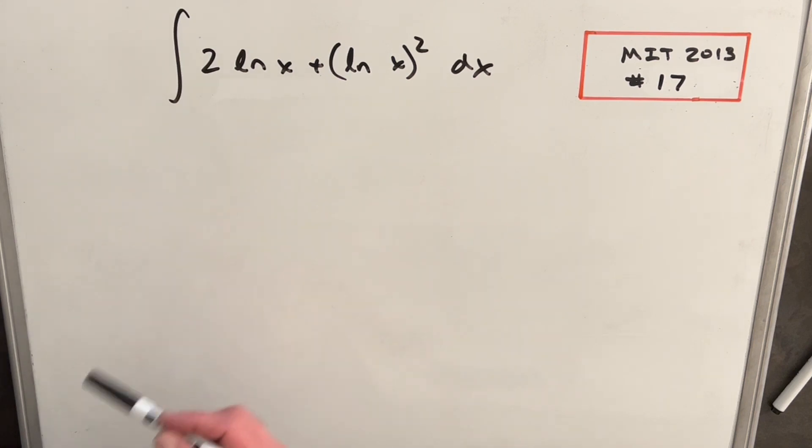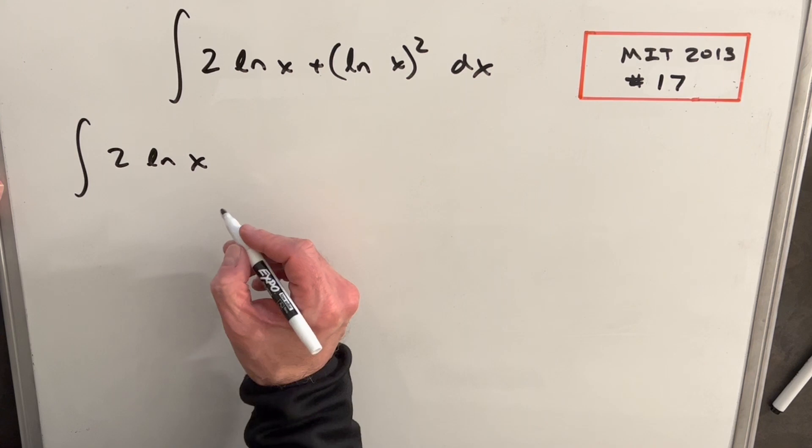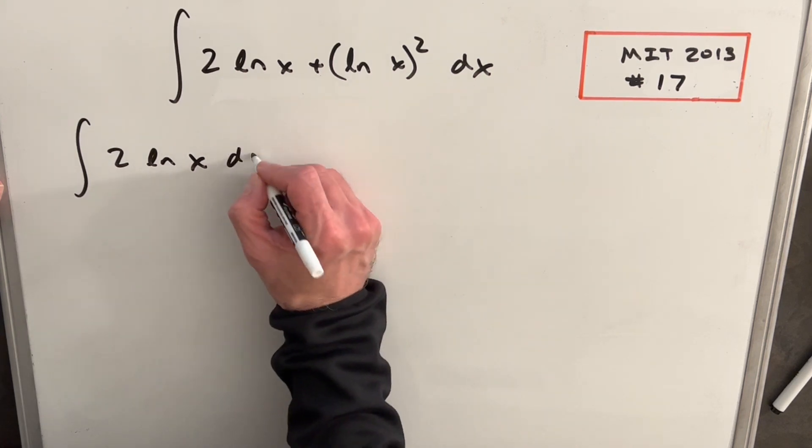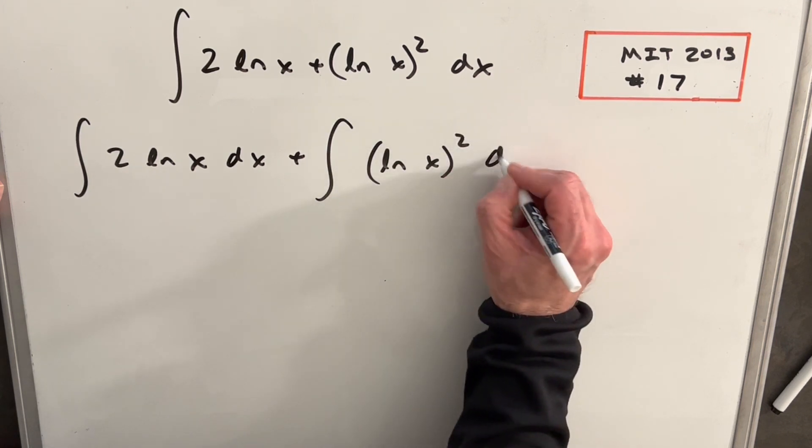It's odd that we're actually adding two things because that means I can break this into two integrals. So we'll write this as integral of 2 ln x dx plus integral of ln x squared dx.